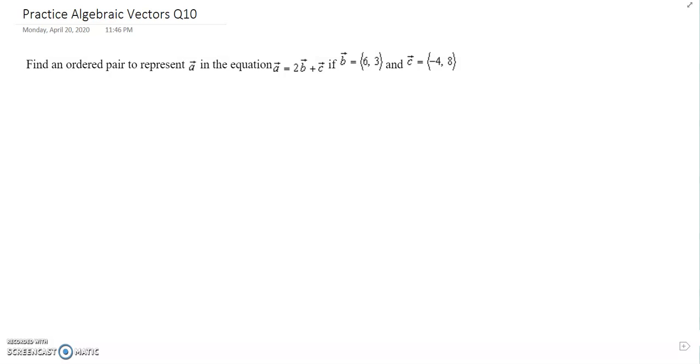Okay, number 10. Find an ordered pair that represents a in this one. Okay, so we need to represent a. A equals 2 vector b plus vector c. And right here I'm going to plug in, this is vector b, so I'm just going to plug it in like this.